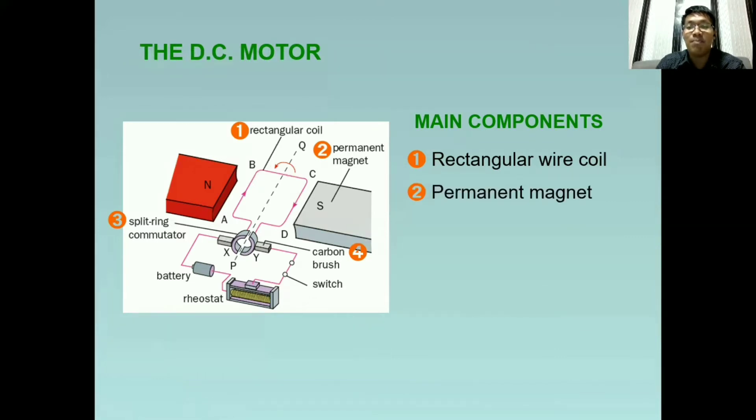Pangalawa is the permanent magnet. So the permanent magnet is here. The north and the south. Pangatlo, the split ring commutator. And the split ring commutator here is this one. And lastly, the carbon brushes. So we have two. So here's the carbon brushes, which is directly connected to the split ring commutator.